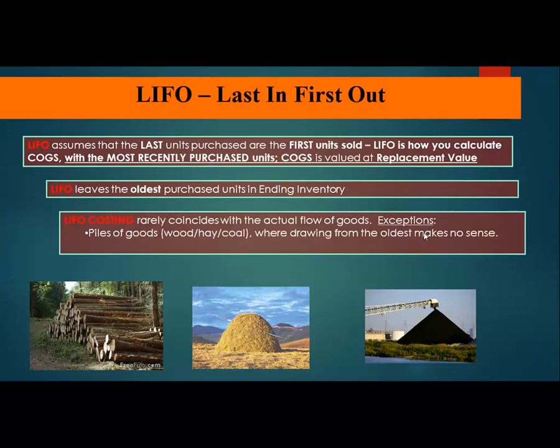LIFO assumes that the last units purchased are the first units sold. LIFO is how you calculate cost of goods sold, and you're going to pull from the most recently purchased units. Therefore, cost of goods sold will be valued at replacement value. This has the effect of leaving the oldest costs in ending inventory, so ending inventory will be the least current cost — the old cost.